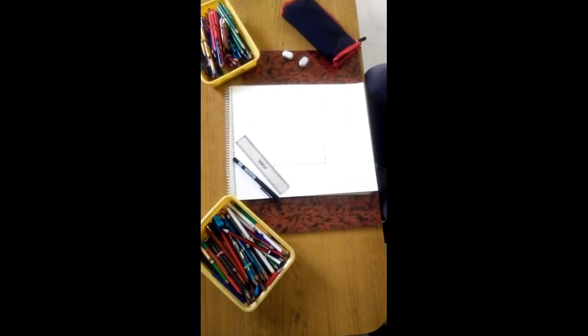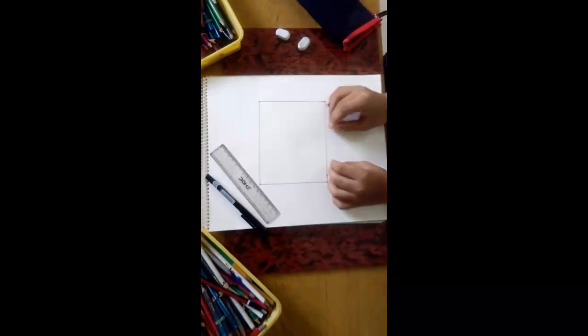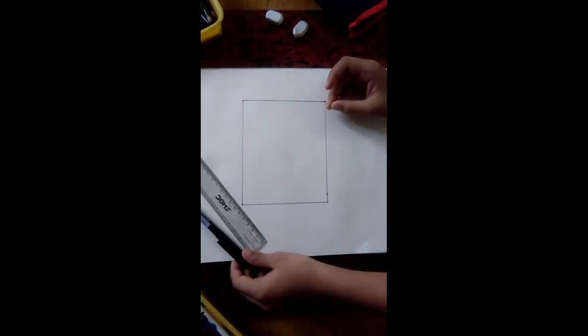So let's start. First you have to draw a box like this in a sheet of paper. Shade it in.